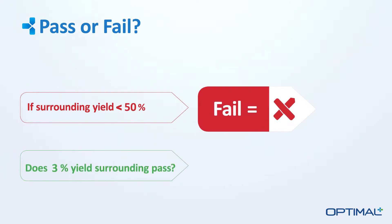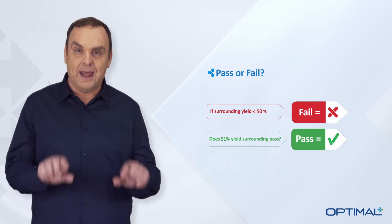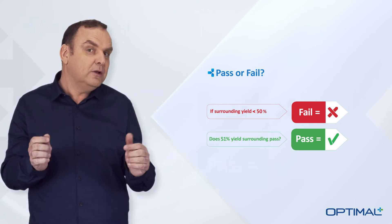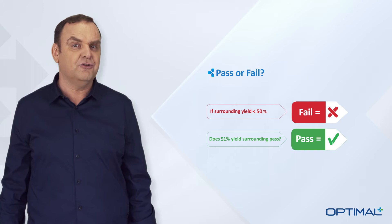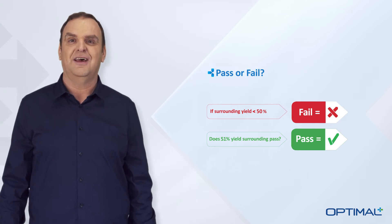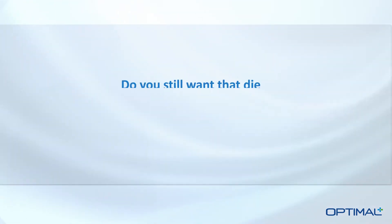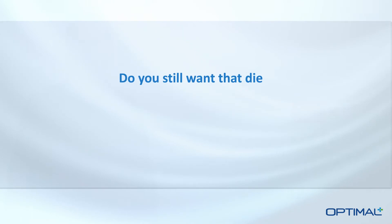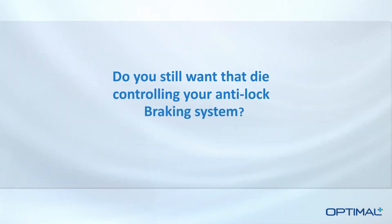But what happens if the surrounding yield was 51%? Well, according to the algorithm, the die is good. But what if I tell you that the die came from the edge of a low-yielding wafer with a bunch of borderline parametric measurements and it was retested eight times before it passed? Do you still want that die controlling your anti-lock braking system? Probably not.